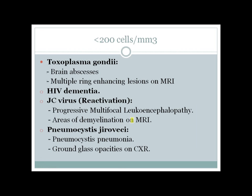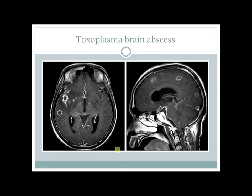If the cell count is lower than 200, there will be more severe infections. Infection with Toxoplasma gondii can lead to multiple brain abscesses — there will be multiple ring-enhancing lesions on MRI. The patient can also have HIV dementia. There can be reactivation of JC virus, leading to progressive multifocal leukoencephalopathy (PML), manifested on MRI as areas of demyelination. The patient can also get Pneumocystis pneumonia, showing ground-glass opacities on chest X-ray.